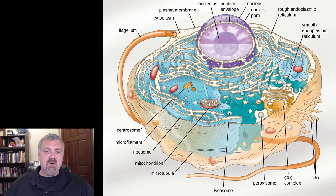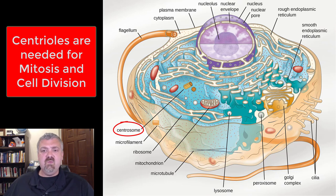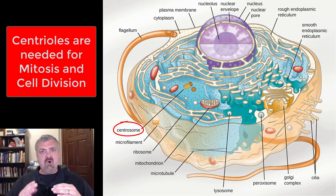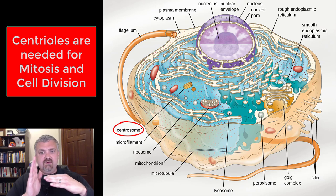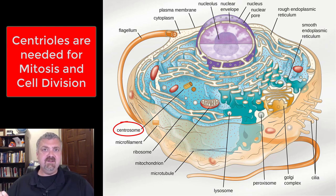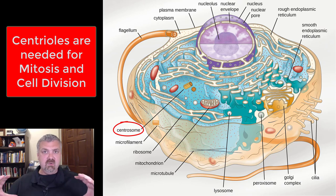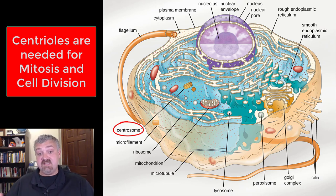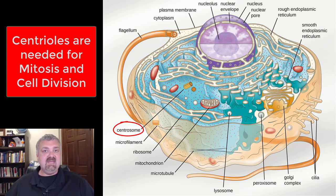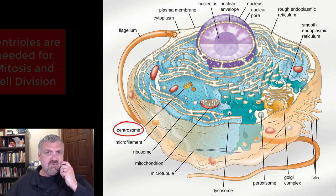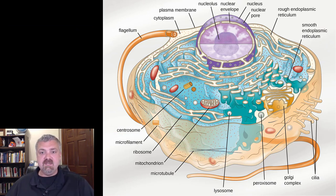The centrosome is where your two centrioles are located, sitting at a right angle to each other. Centrioles are necessary for cell division — they align and pull chromosomes apart during mitosis. If a cell doesn't have centrioles, it can't divide; most neurons, for example, lack them.